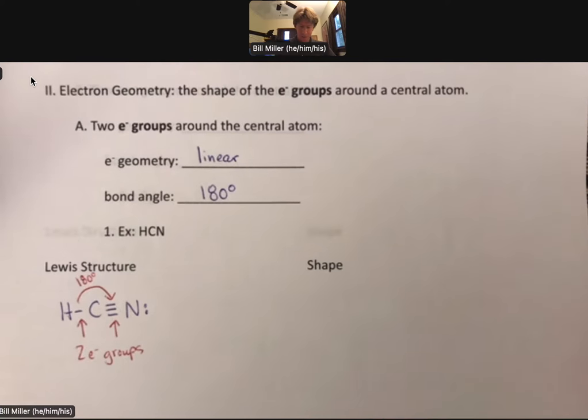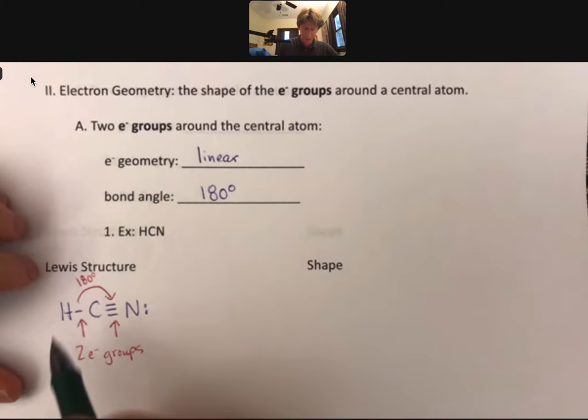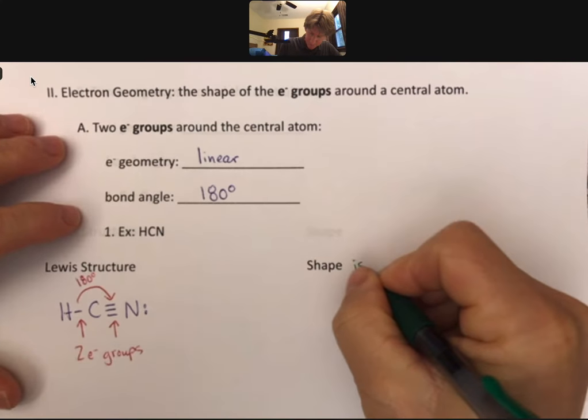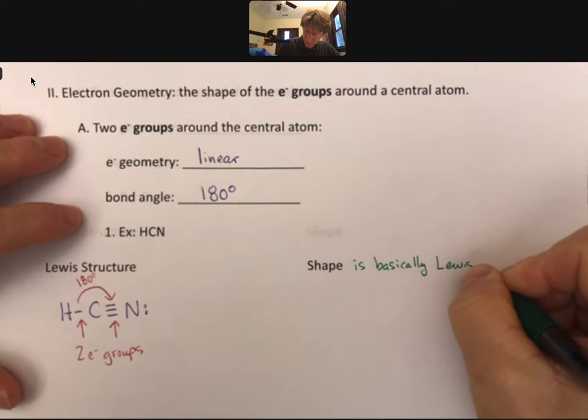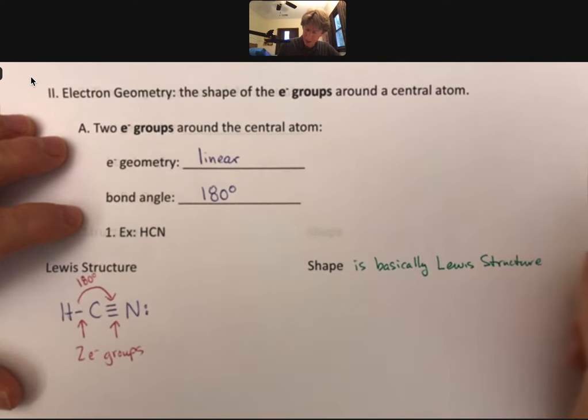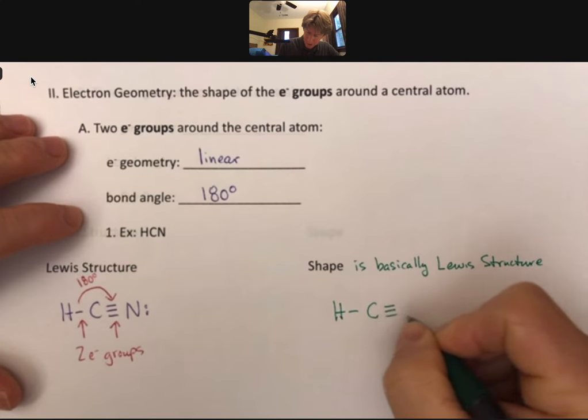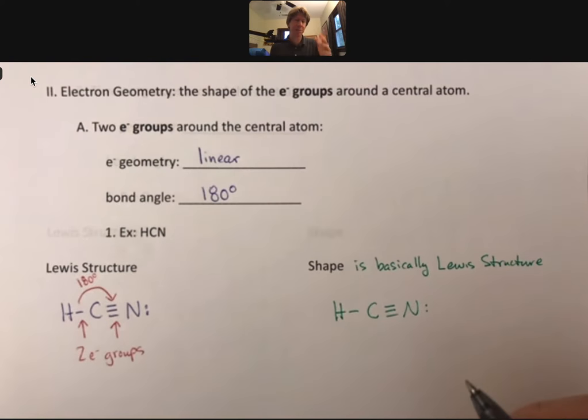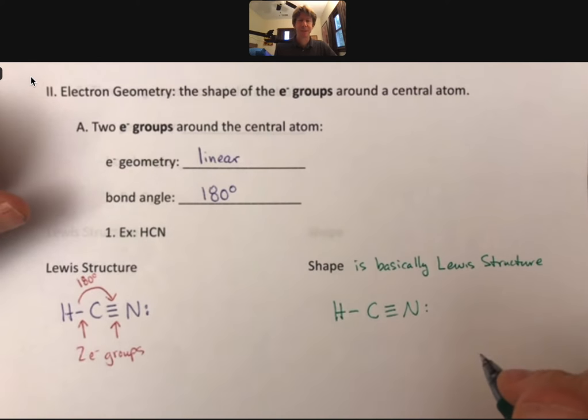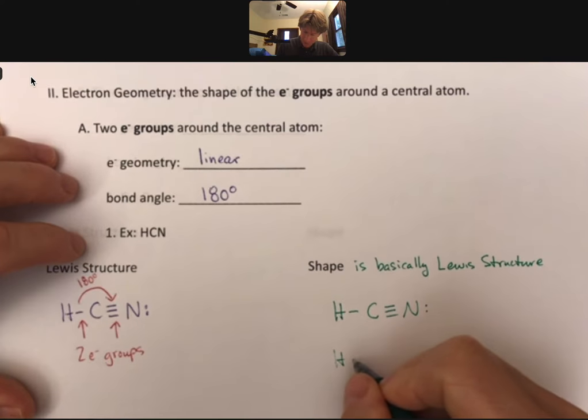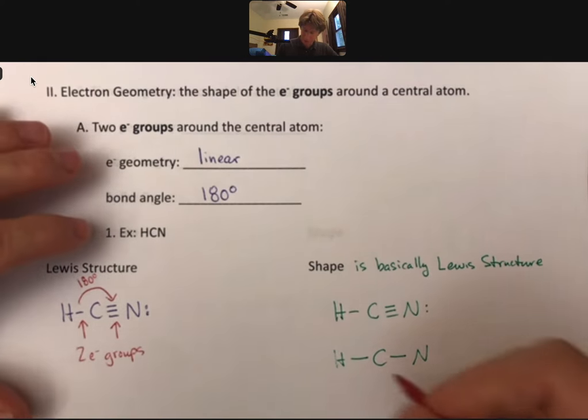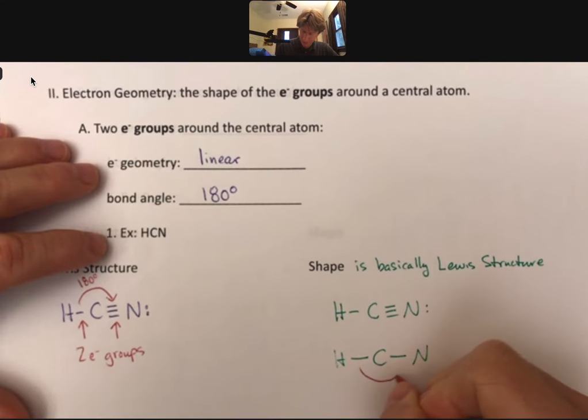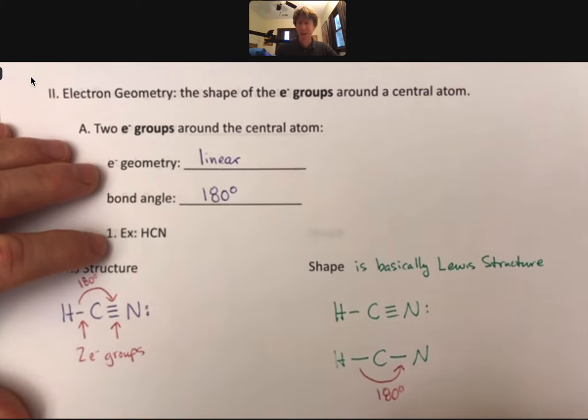And so for this, the shape is very easy to draw because the shape is basically the Lewis structure. But that won't always be the case. If I can, and I will ask you to draw the shape, you just want to draw it like this. The key thing when you draw the shape is that you draw, you should be able to see the bond angle, and sometimes I will ask you to do it as well.